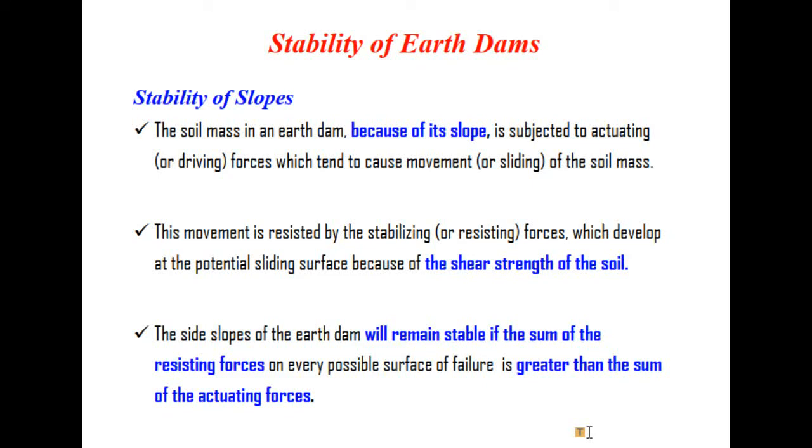This movement is resisted by stabilizing or resisting forces which develop at the potential sliding surface because of the shear strength of the soil. The side slopes of the earth dam will remain stable if the sum of the resisting forces on every possible surface of failure is greater than the sum of the actuating forces.